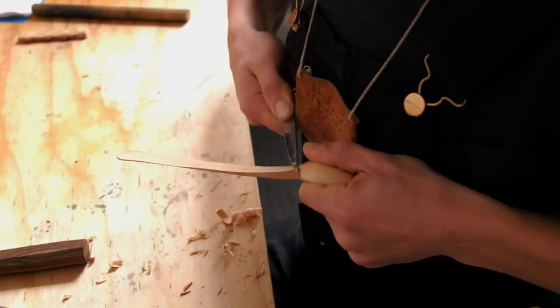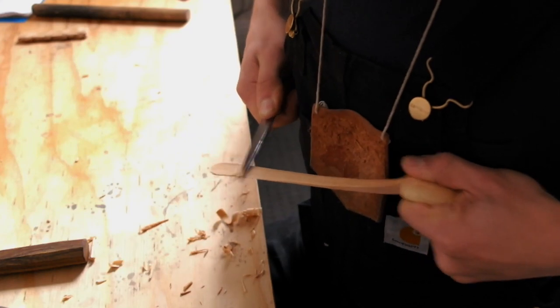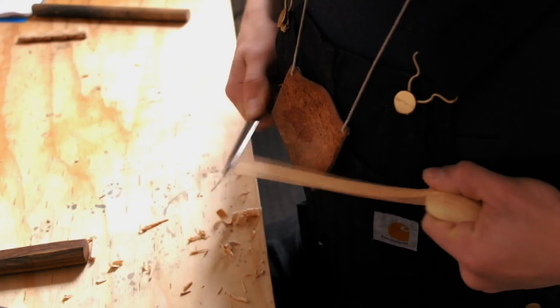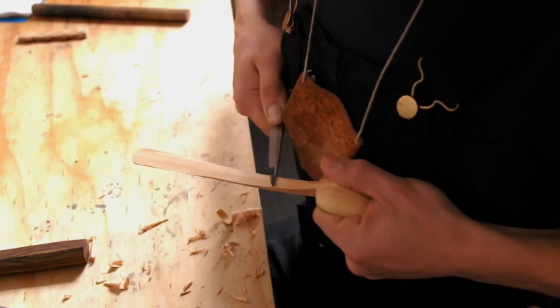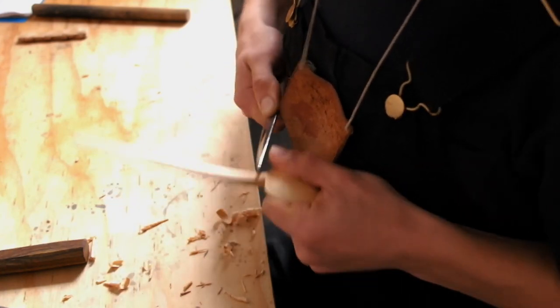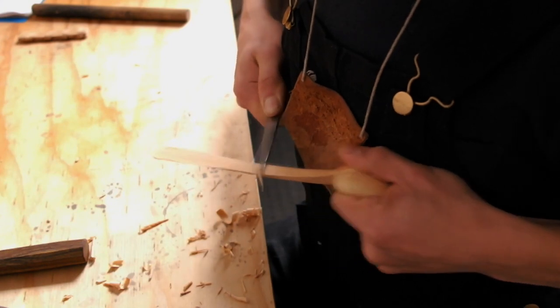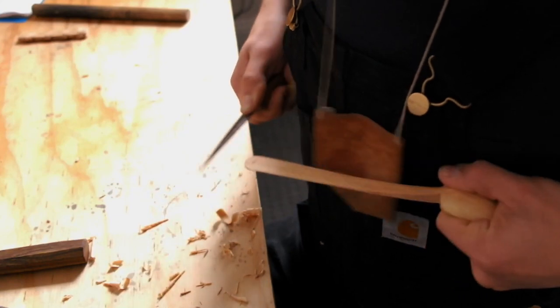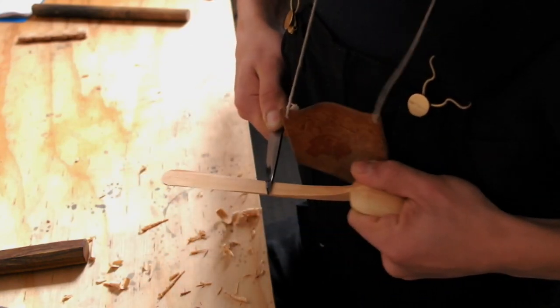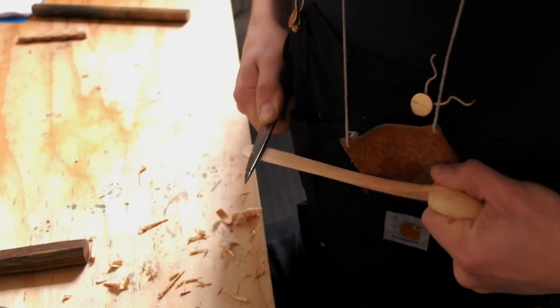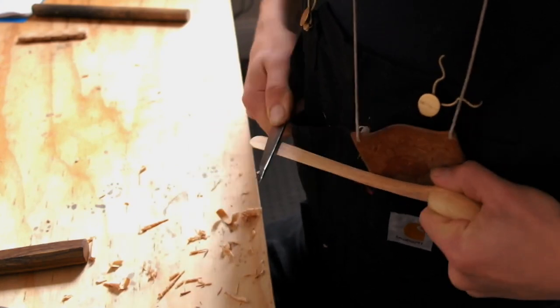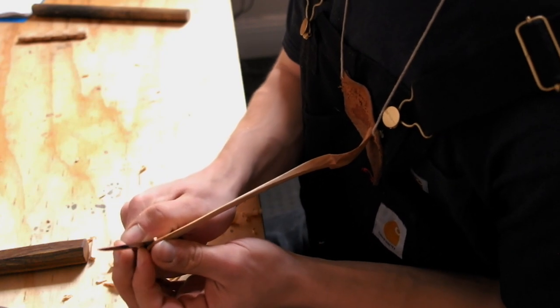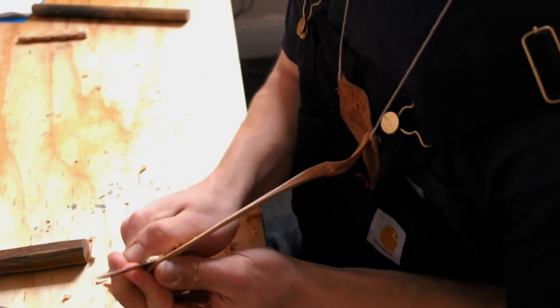So I'm using the tip of my knife here, I'm not really moving the knife, I'm just pulling the spoon against the blade and allowing it to cut at a nice angle. For the top of the handle it's the same thing, but the direction of the cut is going to be the opposite. So I'll start at the top.